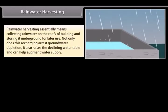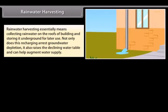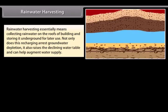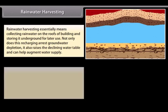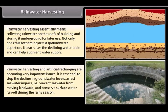Rainwater harvesting essentially means collecting rainwater on the roofs of buildings and storing it underground for later use. Not only does this recharging arrest groundwater depletion, it also raises the declining water table and can help augment water supply. Rainwater harvesting and artificial recharging are becoming very important to stop the decline in groundwater levels, arrest seawater ingress, and conserve surface water runoff during the rainy season.